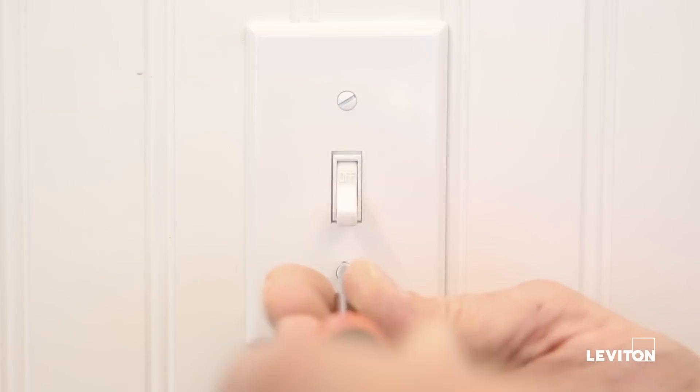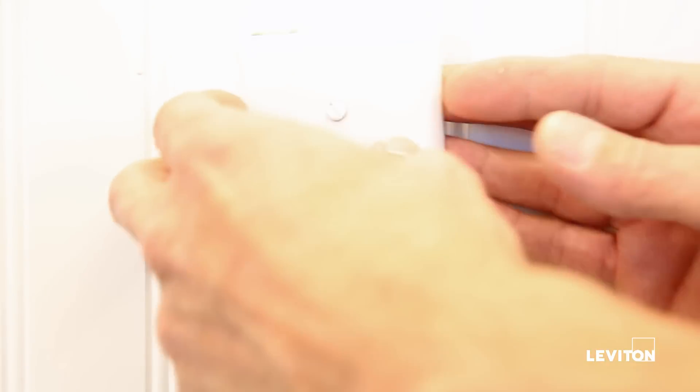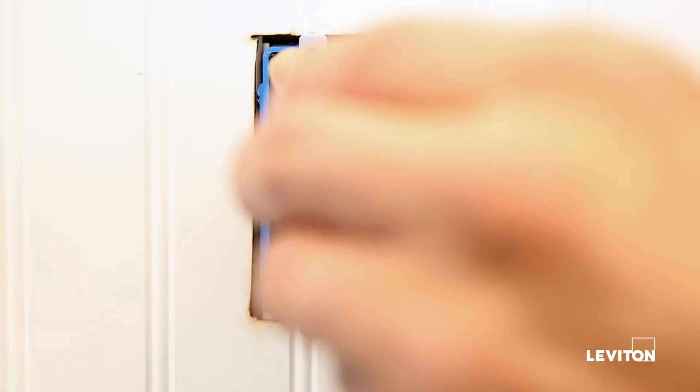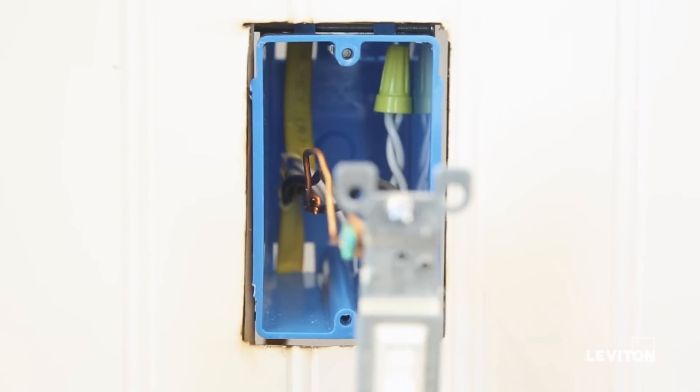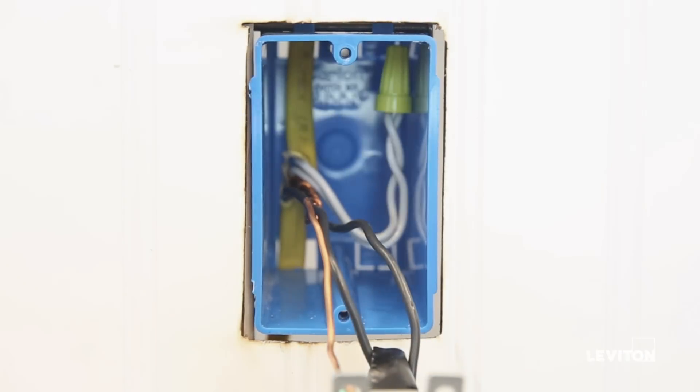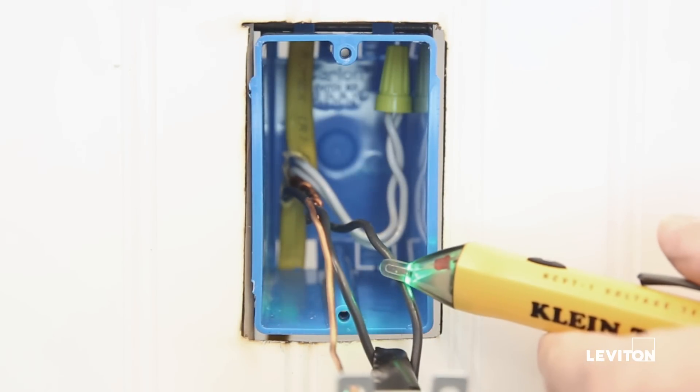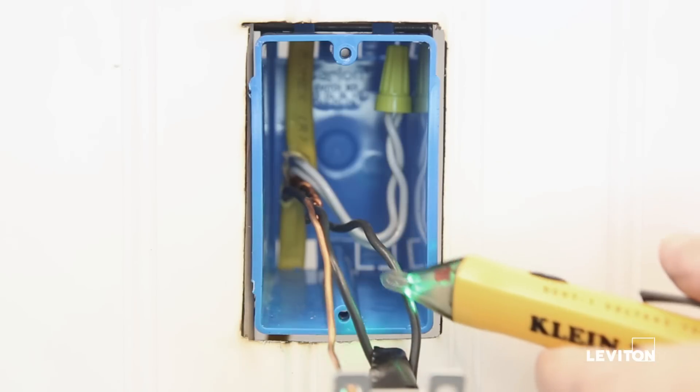Remove the wall plate. Unscrew the switch from the wall box and pull the switch towards you, ensuring you do not touch the wires or the screws on the side. Use the voltage tester to ensure that the power is completely off before proceeding.